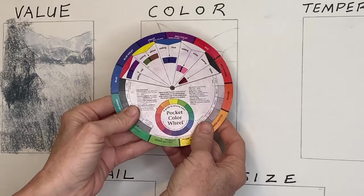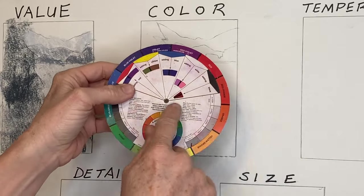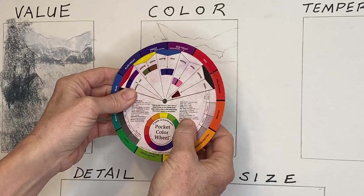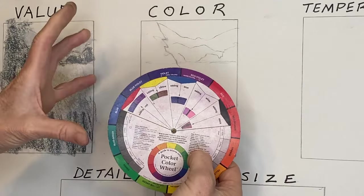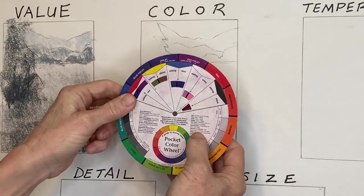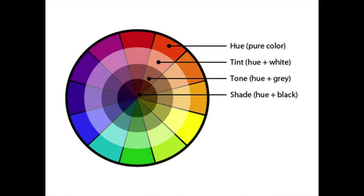I'm reading right here from the pocket color wheel — a great, handy, very inexpensive little tool with so much information. What I'm referring to is intensity, or chroma. Chroma is the word relating to the brightness or dullness of a color. On the outer ring of the color wheel is the pure color with the most intensity.